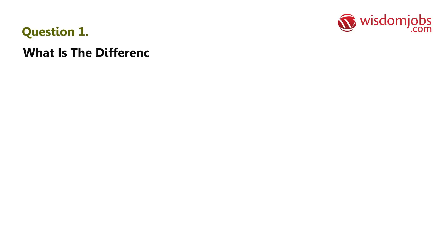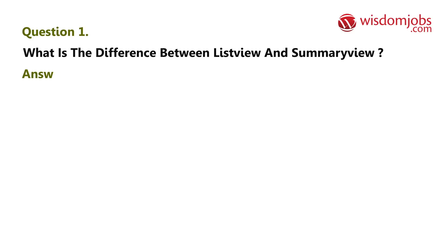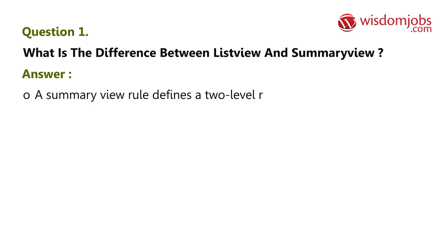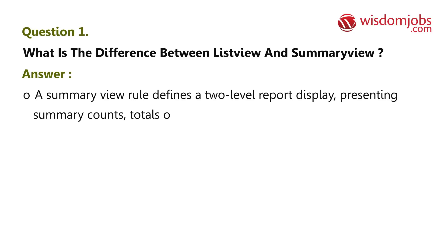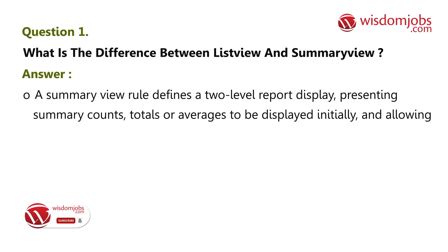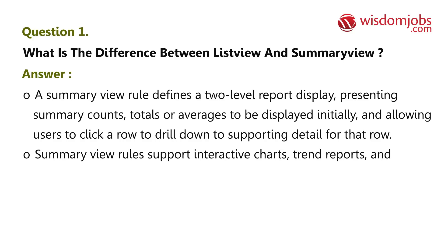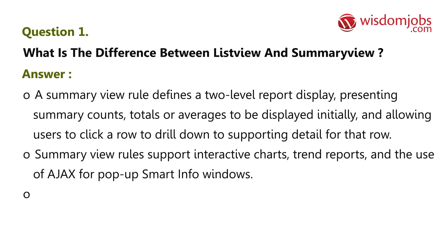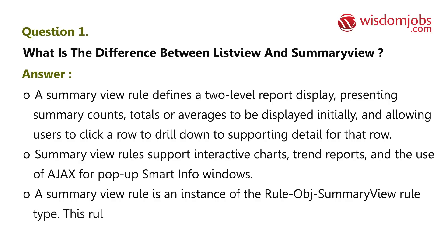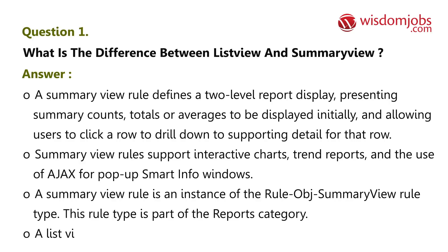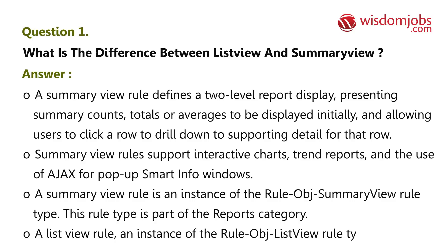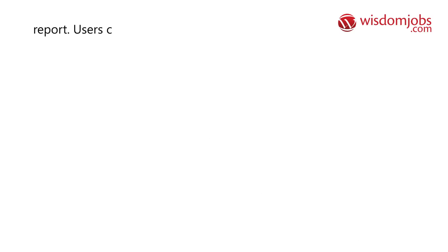Question 1: What is the difference between list view and summary view? Answer: A summary view rule defines a two-level report display, presenting summary counts, totals, or averages to be displayed initially and allowing users to click a row to drill down to supporting detail. Summary view rules support interactive charts, trend reports, and the use of AJAX for pop-up smart info windows. A summary view rule is an instance of the rule-obj-summary-view rule type, part of the reports category. A list view rule, an instance of the rule-obj-list-view rule type, defines a report users can personalize easily and interact with.